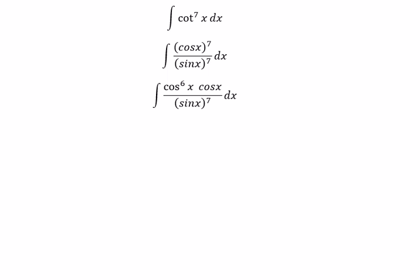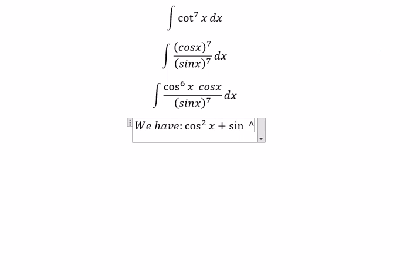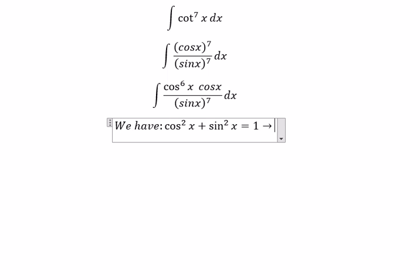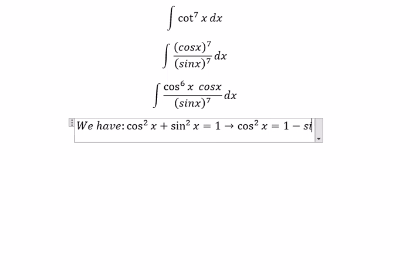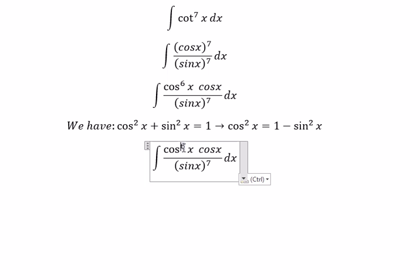We use the identity cosine x squared plus sine x squared equals 1, so cosine x squared equals 1 minus sine x squared. This gives us the substitution we need.